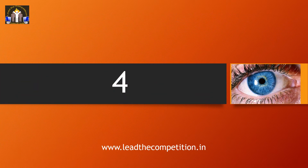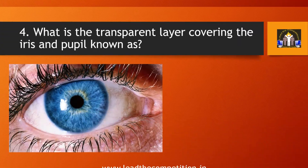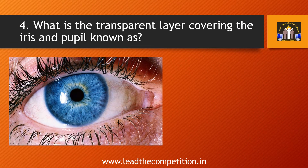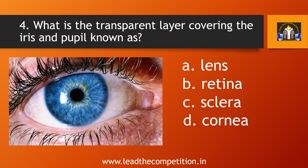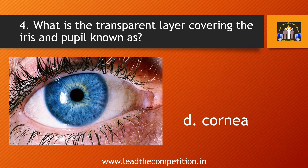Question number 4. What is the transparent layer covering the iris and pupil known as? A. Lens, B. Retina, C. Sclera, or D. Cornea. The answer is D. Cornea.